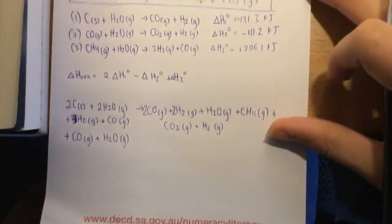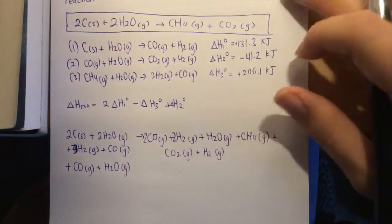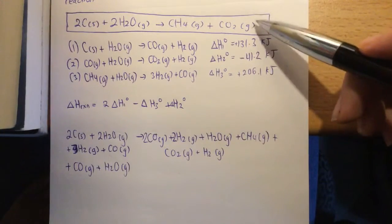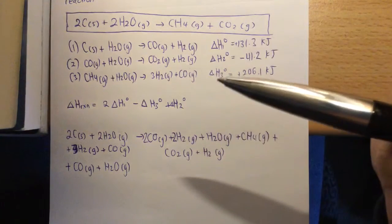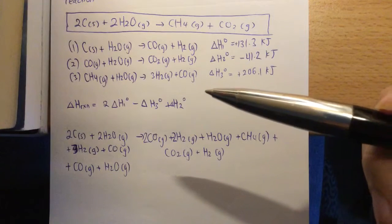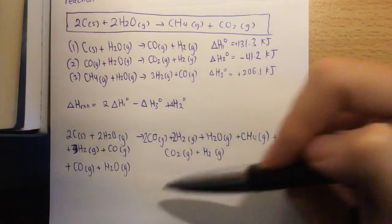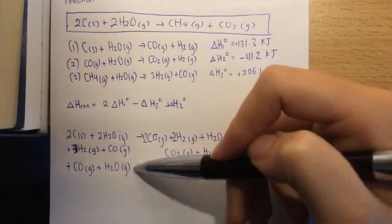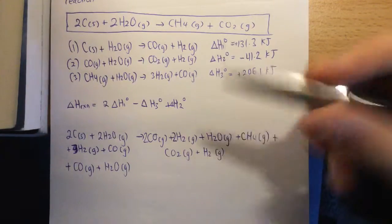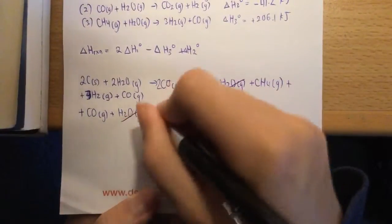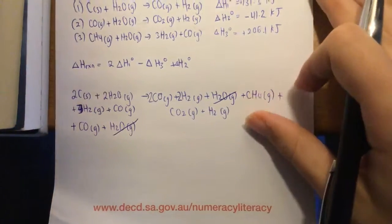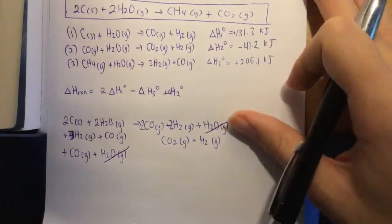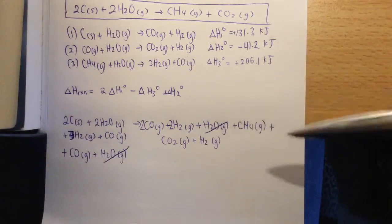so now we want to make sure that we can actually get to this original equation here, this one right up the top, and in order to do that, we essentially need to cancel things out from both sides. So let's see what can we cancel. Well, we have a H2O gas here, and we've got a H2O gas there, so obviously we can cancel them out right away.